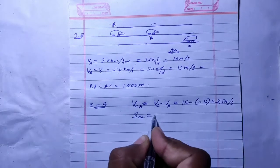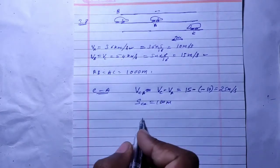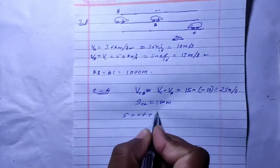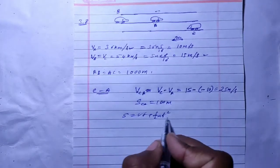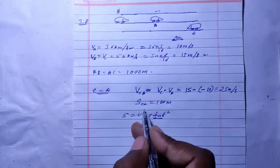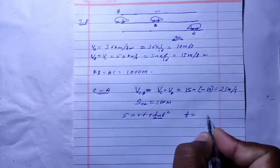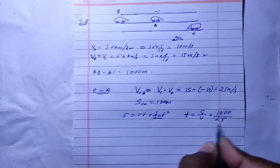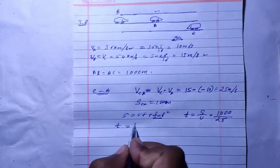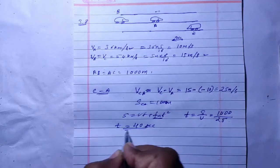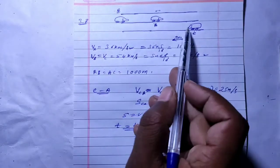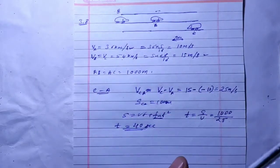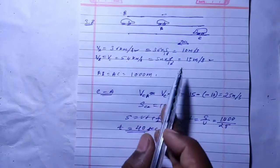The distance is 1000 meters. We apply s equals ut plus half at squared, but here acceleration is zero, so this term is zero. We find the time: time equals s by u, which is 1000 divided by 25, giving us 40 seconds. So in 40 seconds, C will cross A. Since C will cross A in 40 seconds, B must overtake A before that. B must overtake A in at least 40 seconds, or before 40 seconds. If B takes longer than 40 seconds to overtake, there will be an accident.